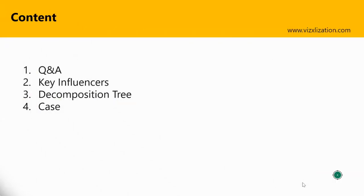For today's tutorial I have four different points. We're gonna learn three different AI visuals: Q&A, key influencers, and also the decomposition tree. And finally, as always, I have a really nice case to go over these three different visuals.